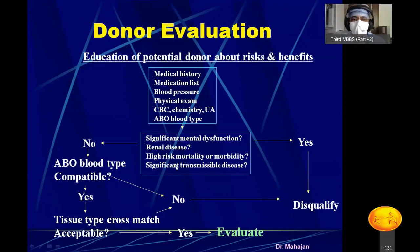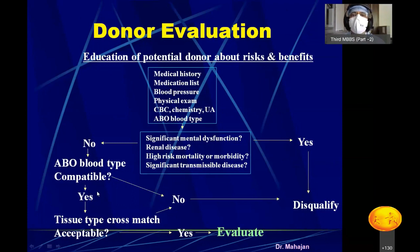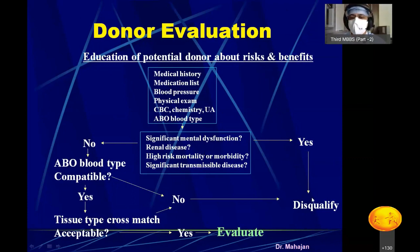You must also assess for the presence of renal diseases, higher risk of mortality or morbidity to the donor, and any transmissible diseases. If ABO compatible and all assessments are negative, the donor is accepted. If the donor has psychosis, renal diseases, diabetes, or hypertension, they are disqualified — their kidney cannot be used for the recipient.